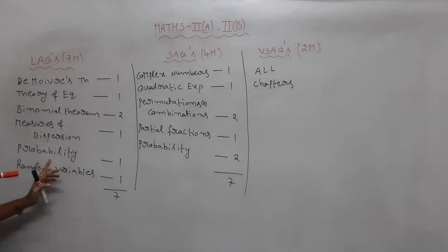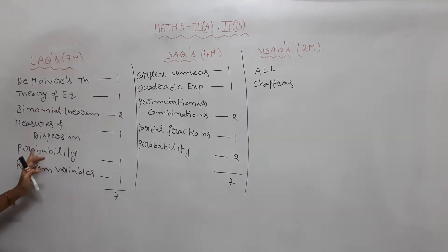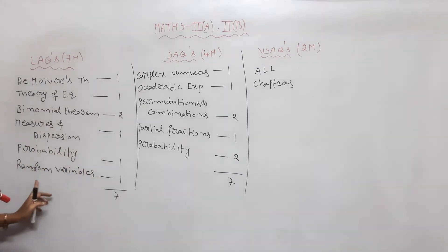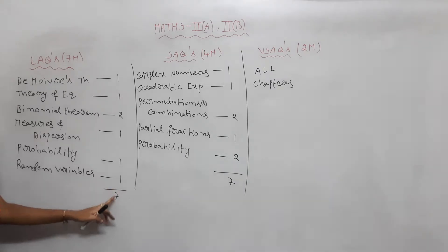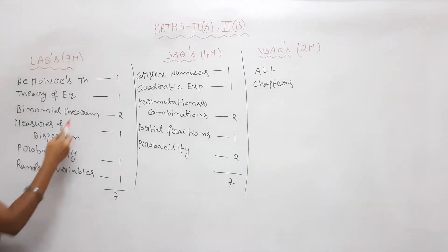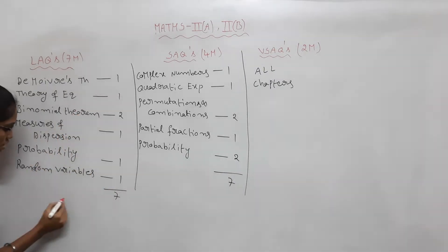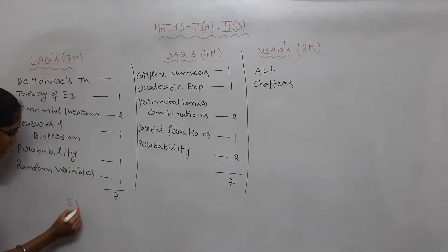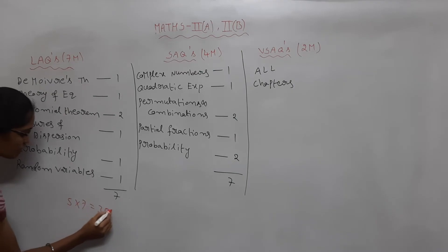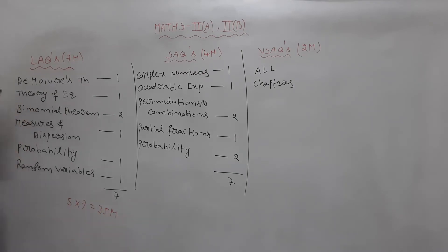Next are measures and dispersions, and stats. Probability has 1 LAQ, and random variables also counts. In total, there are 5 LAQs, and 5 into 7 equals 35 marks.